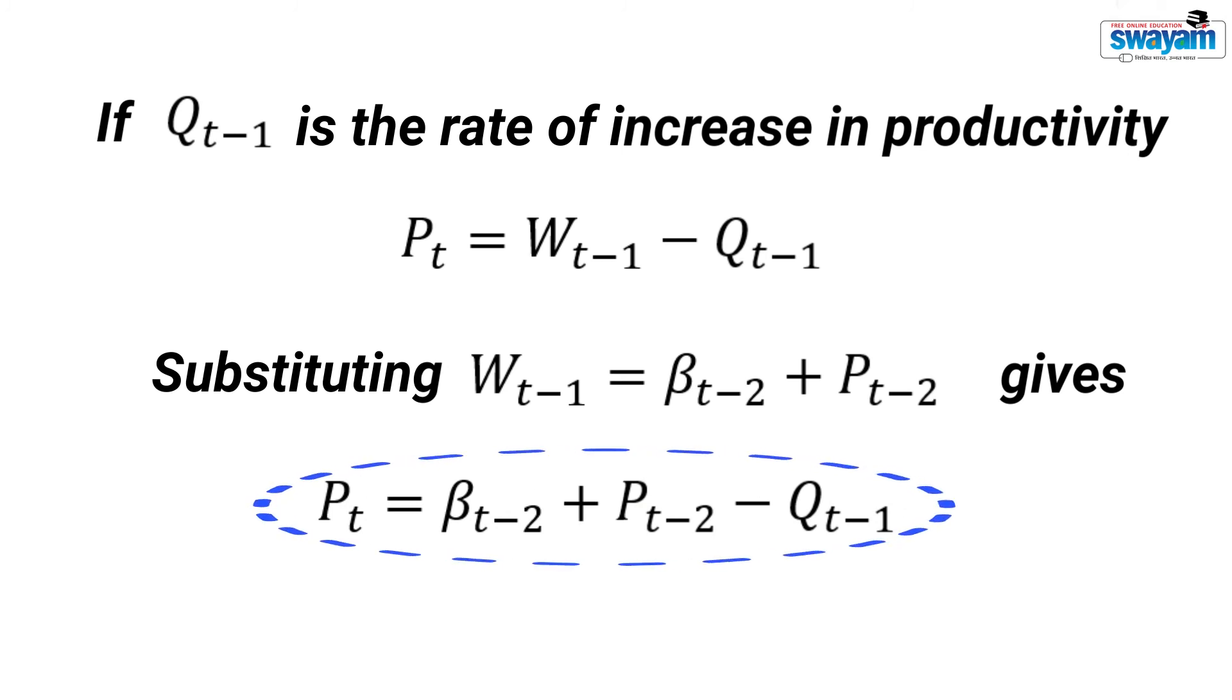This is a second order difference equation. This shows that the increase in price in the current period is determined by the push by the unions, rate of increase in price two periods in the past and the rate of increase in productivity.